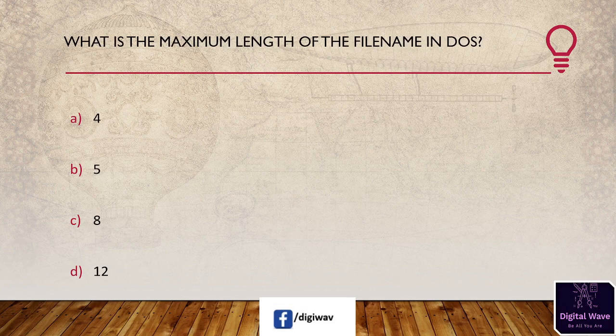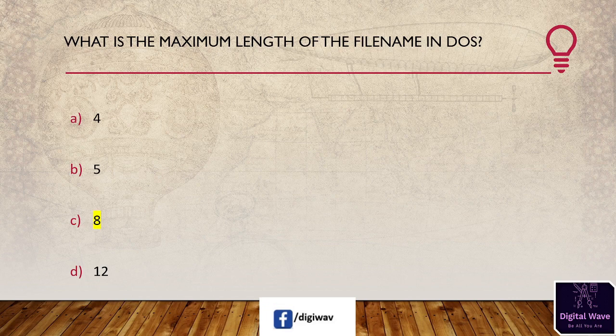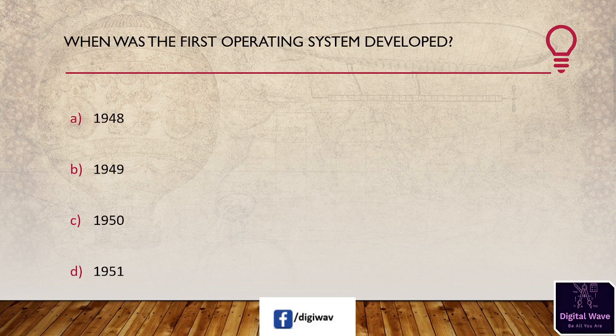Next question: what is the maximum length of a file name in DOS? The right answer is eight. The maximum length of the file name is eight characters in the DOS operating system. It is commonly known as an 8.3 file name.